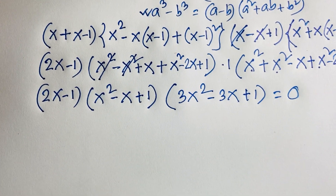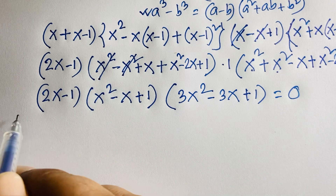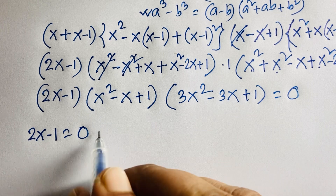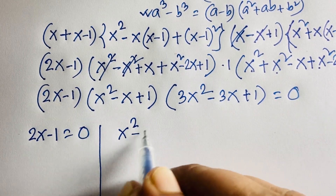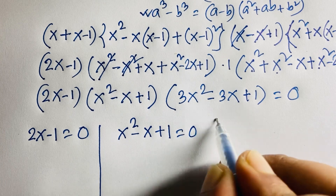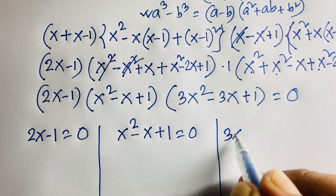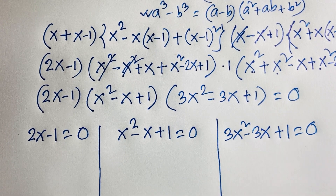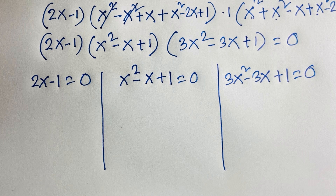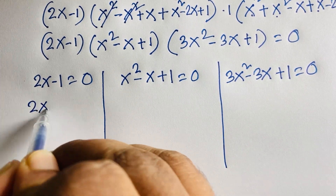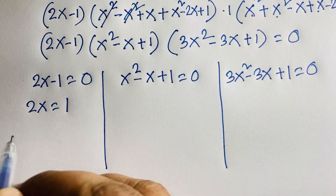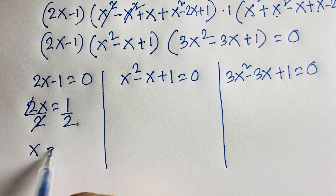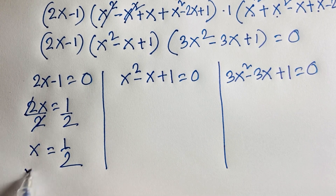We now have three cases. Case 1: 2x minus 1 equals 0, giving 2x equals 1, so x equals 1/2. This is our first answer. Case 2: x² minus x plus 1 equals 0. Case 3: 3x² minus 3x plus 1 equals 0.